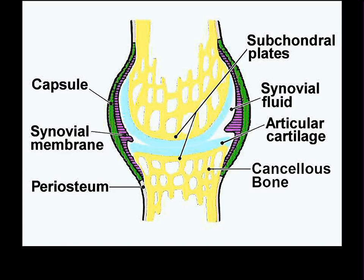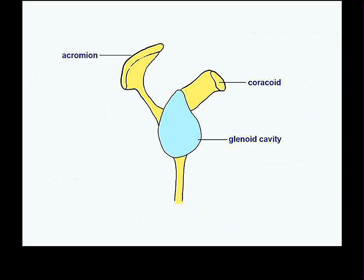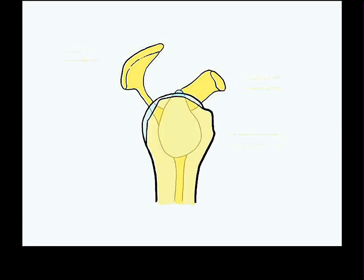Every joint has to have a mechanism to prevent dislocation, and the shoulder is the one we'll look at now. Here's a lateral view of the glenoid cavity with the humerus placed in position. When you're just standing, gravity pulling down on your upper limb would by itself create a subluxation. What stops that — proven in a very elegant way — is that the synovial fluid is under negative pressure, which tightens the capsule and is enough to prevent the shoulder from subluxing under gravity alone.